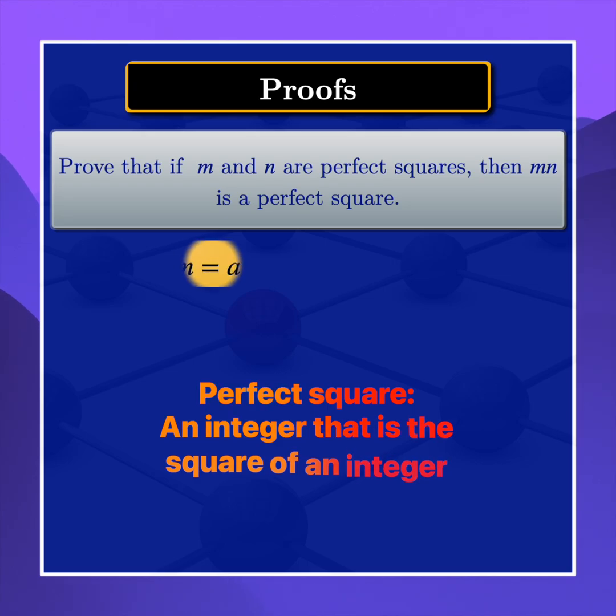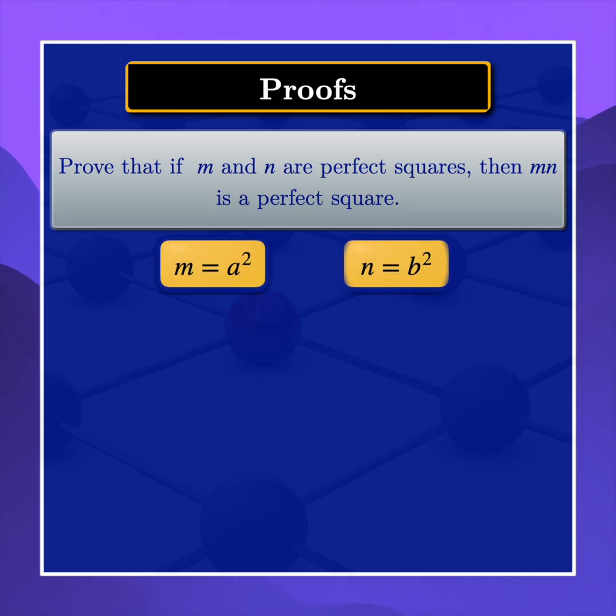So we can write m as a squared and n as b squared, where a and b are integers.